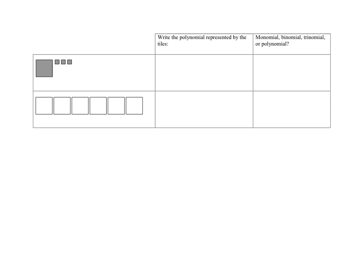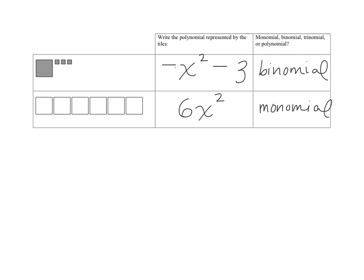There are 2 examples for you to try. So take a moment, pause the video, and write down the expression that you see in the tile picture, and then tell if it's a monomial, a binomial, a trinomial, or a polynomial. Do that, and come back when you're done. Okay, so here are the answers — check yourself. Hopefully you got those right.